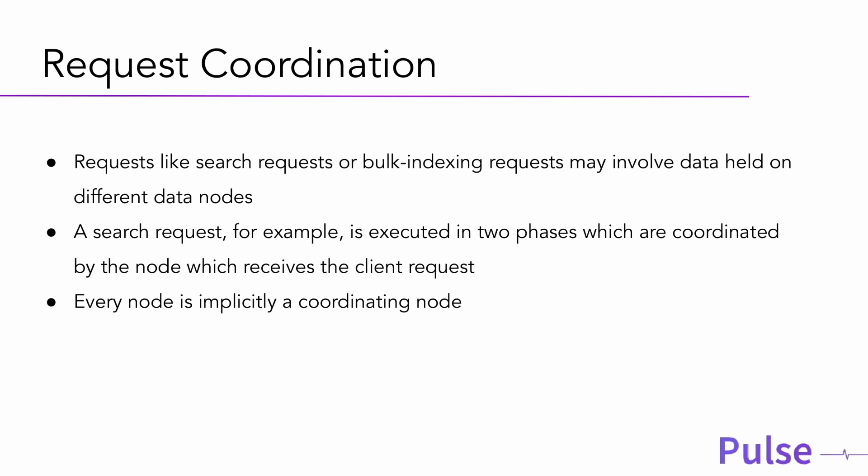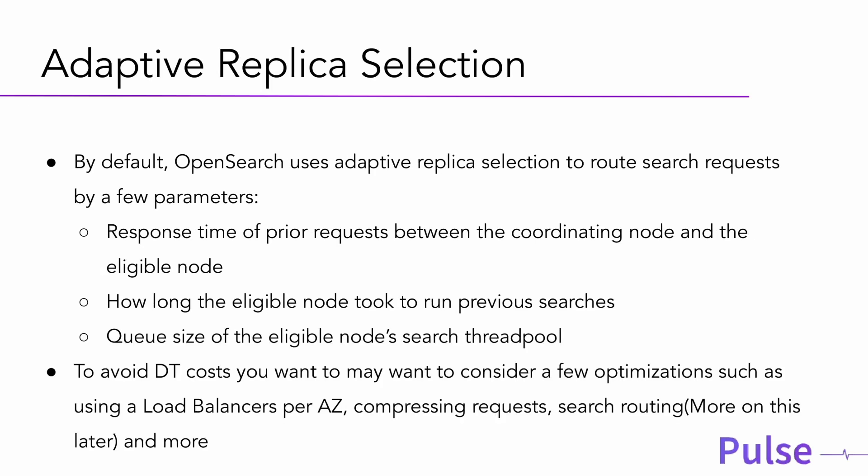On large clusters or clusters with very heavy search traffic, it makes sense to extract CPU from data nodes and use dedicated coordinator nodes — also called client nodes — which handle request coordination. You send all search requests to the load balancer or IPs of client nodes. They have their local cluster state, do not store data, and are not responsible for cluster state. They can even use spot instances, making them cost-effective.